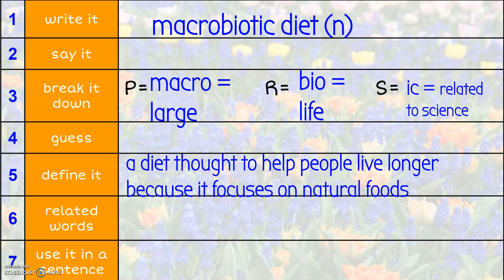And what macrobiotic actually means, it's a diet thought to help people live longer because it focuses on natural foods. Okay, so a lot of times, some diets that you might hear of as macrobiotic are keto. That's a popular diet that people do. People believe that if they eat in a certain way, they change the way they eat. They eat larger quantities of vegetables and proteins, of natural fats, then it will help them be healthier and then live longer. So keto is a good example of a macrobiotic diet.